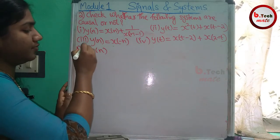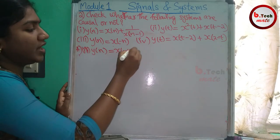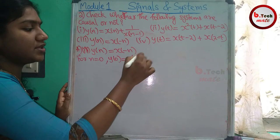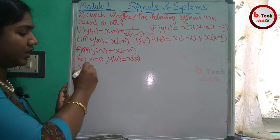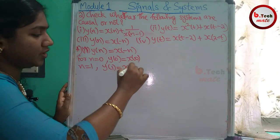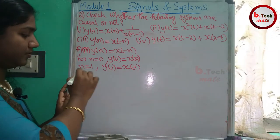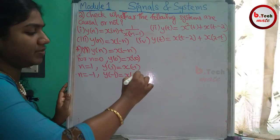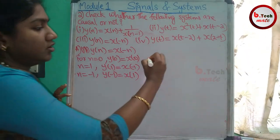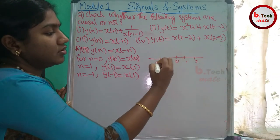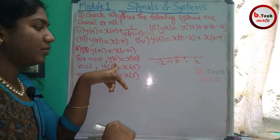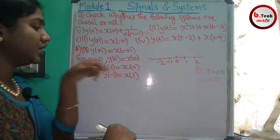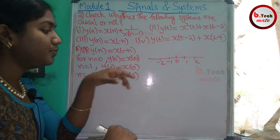Now for the third system: y[n] = x[-n]. For n=1, y[1] = x[-1]. For n=0, y[0] = x[0], which is the present output depending on the present state.